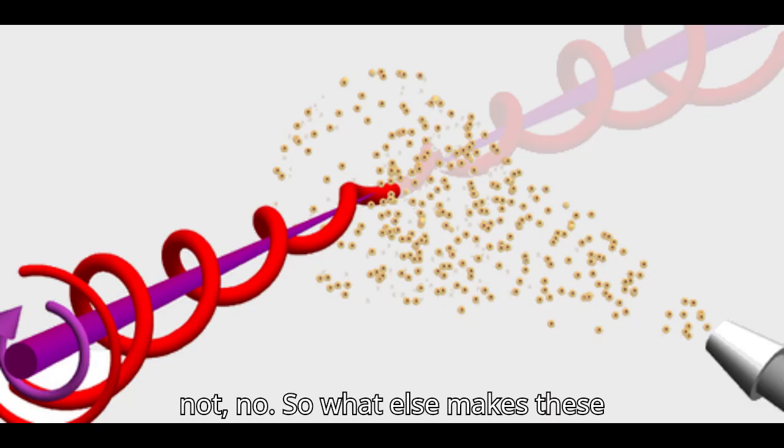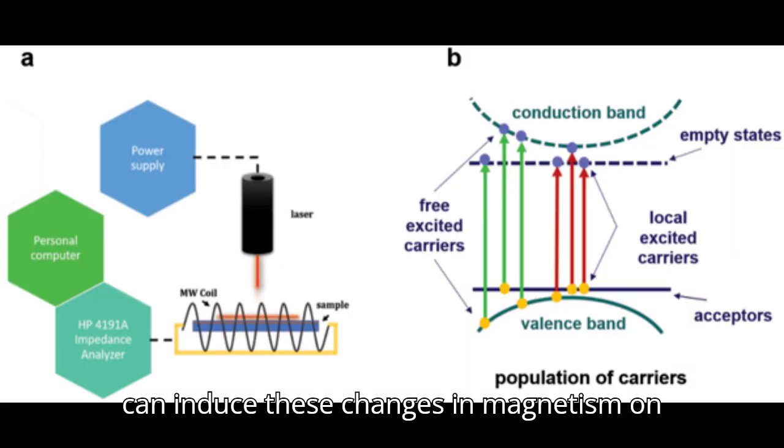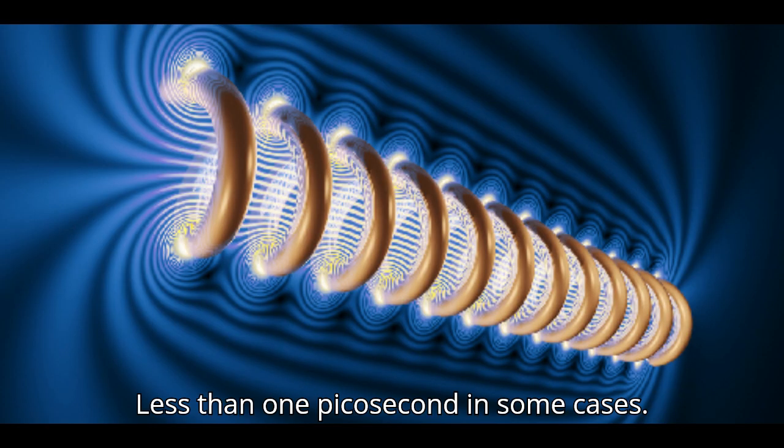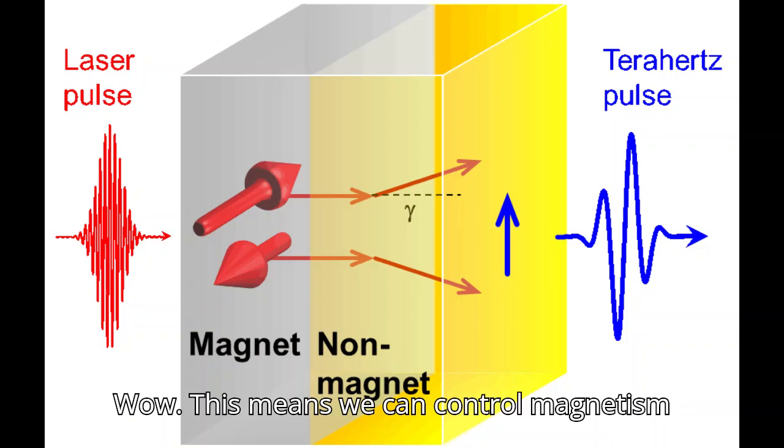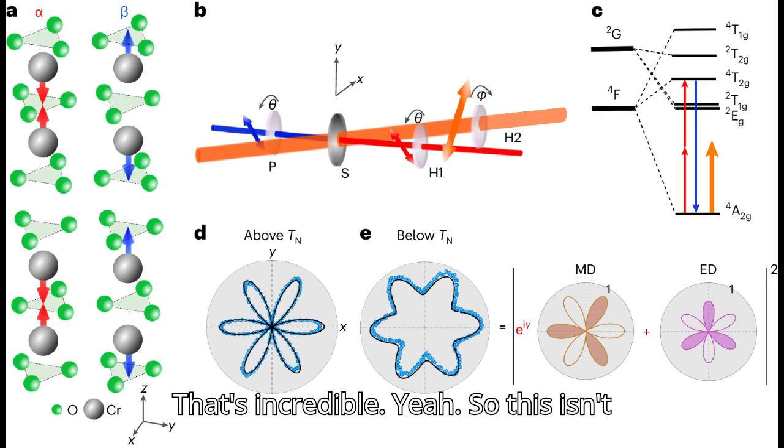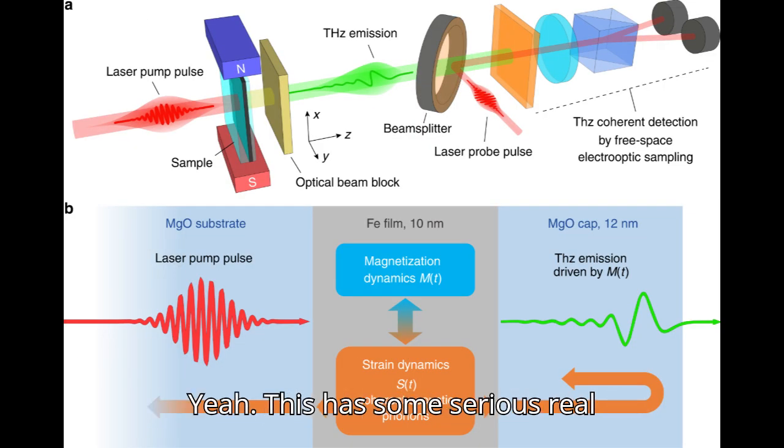So no accidental meltdowns in the lab. They can induce these changes in magnetism on an unbelievably fast timescale - less than one picosecond in some cases. This means we can control magnetism with phenomenal speed and precision.